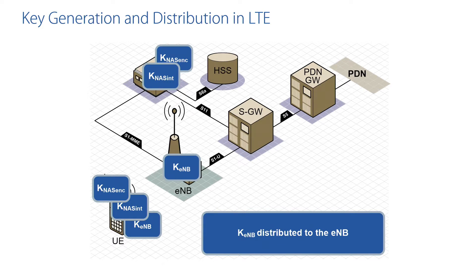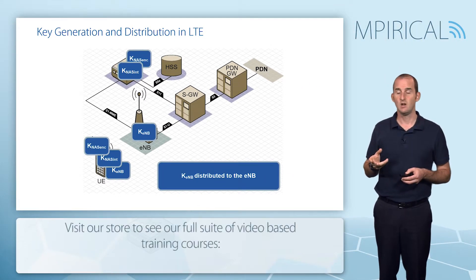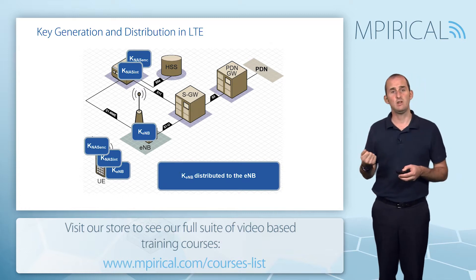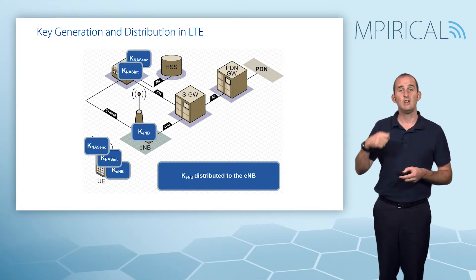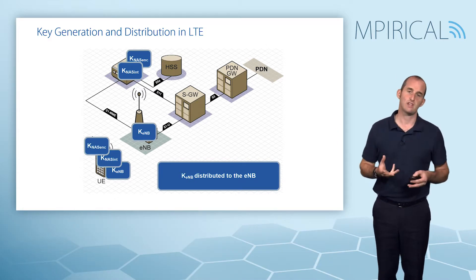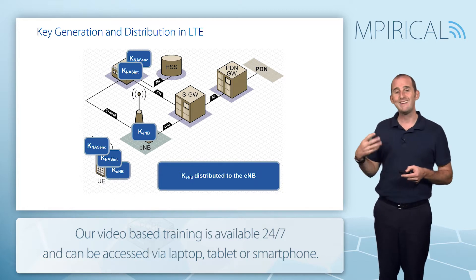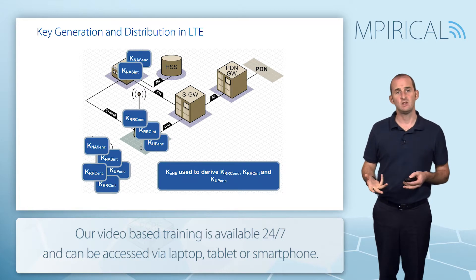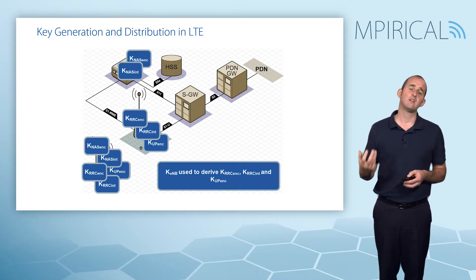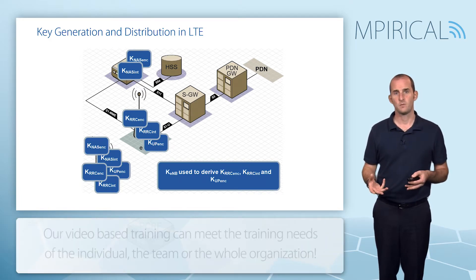During the attach process, KE Node B is supplied to the eNodeB — specifically, we see that key being sent in the S1AP initial UE context message. When the MME first sets up the UE context in the eNodeB, it also supplies KE Node B. A further key derivation process then takes place: both the terminal and the eNodeB generate the additional keys required for RRC encryption, RRC integrity checking, and user plane encryption.